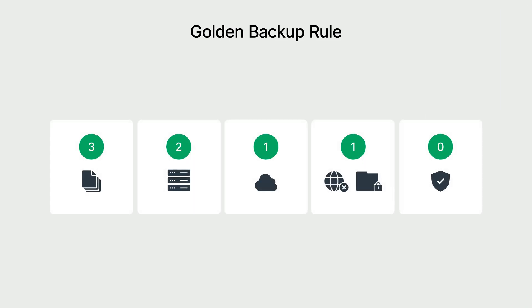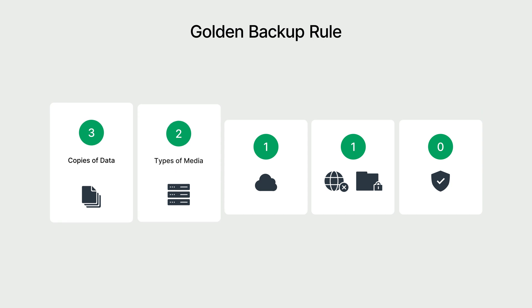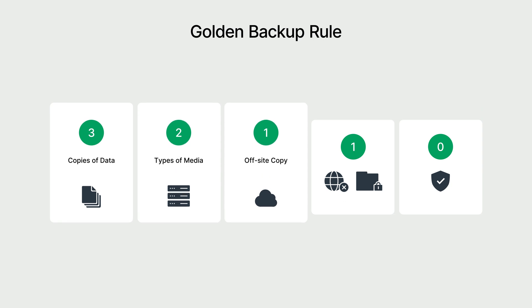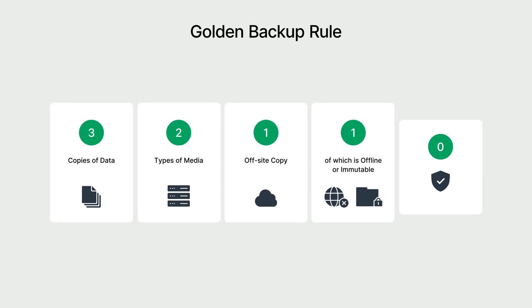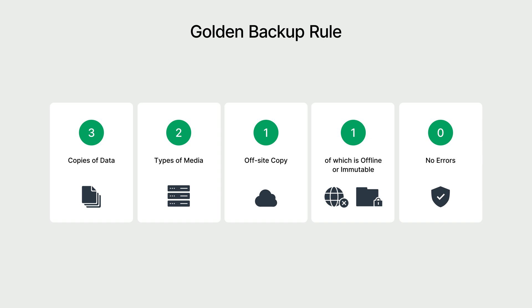The 3-2-1-1-0 rule is a key principle of data protection. It calls for three copies of your data on two types of media, one copy stored off-site, another kept offline or immutable, and zero errors confirmed through regular verification. This layered approach keeps your data safe and recoverable at all times.